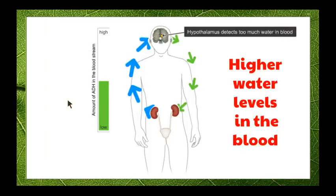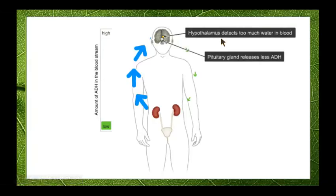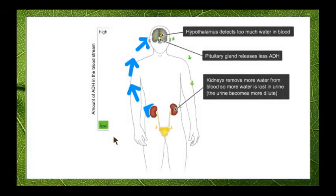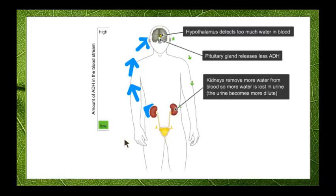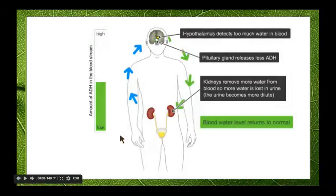When we have higher levels of water in the blood — for example, after drinking regularly during the day — the hypothalamus detects this and stops or decreases the release of ADH. As a result, the kidneys remove more water from the blood, producing a large volume of dilute, light straw-colored urine. Once we excrete that excess water, blood water levels return to normal and ADH in the bloodstream stabilizes.